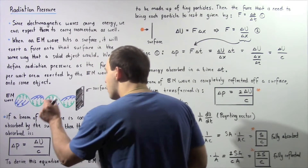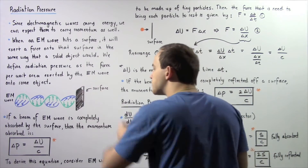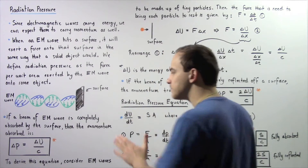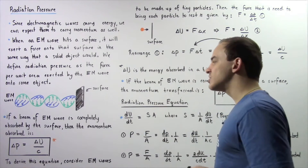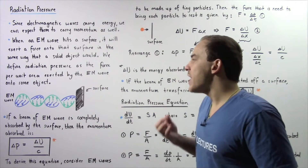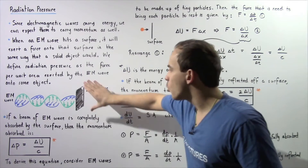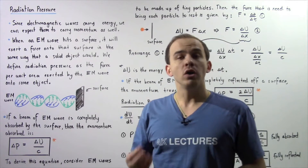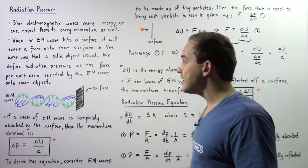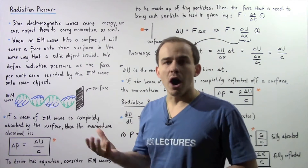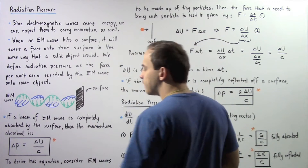Now when this beam of electromagnetic radiation hits the surface, and if the surface completely absorbs this beam of electromagnetic radiation — none of it is actually reflected — then all that energy stored inside the electric and magnetic fields will be absorbed by the surface. All the linear momentum will also be absorbed by our surface, and the equation that gives us the quantity of linear momentum absorbed by the surface is given by this formula.